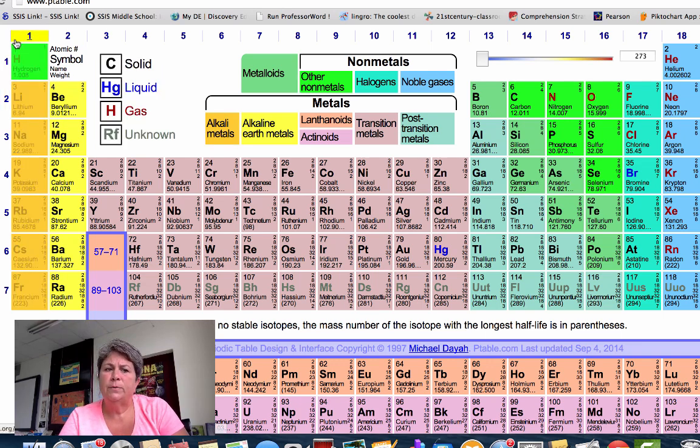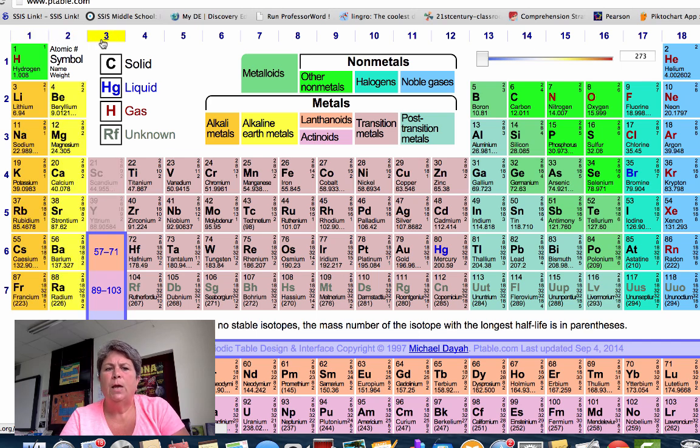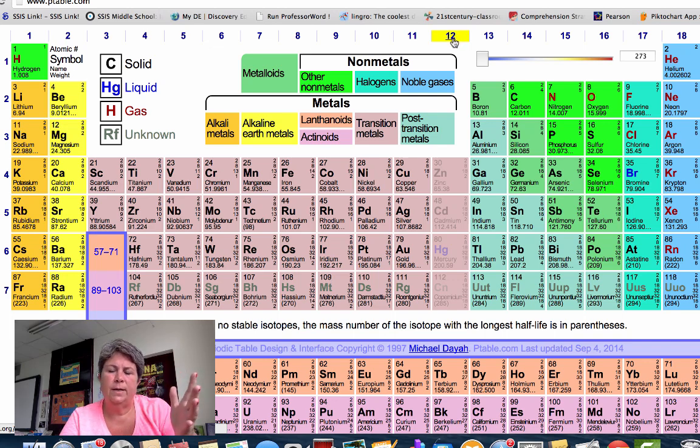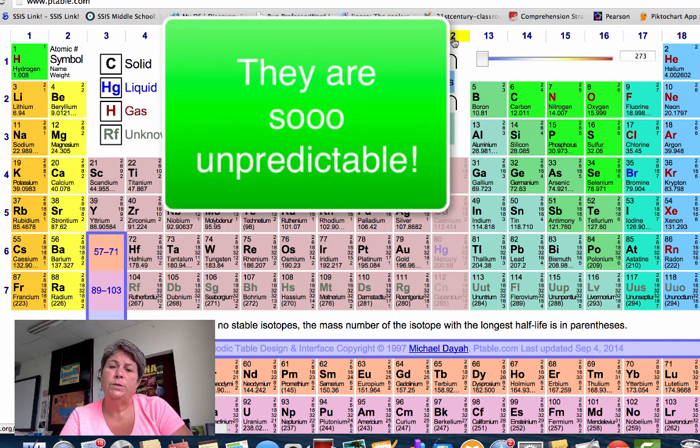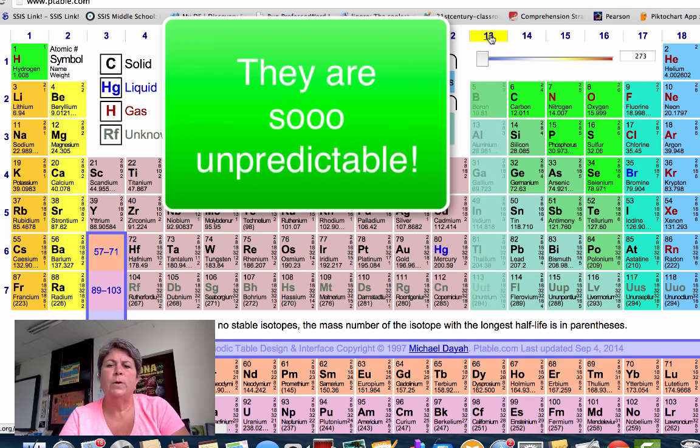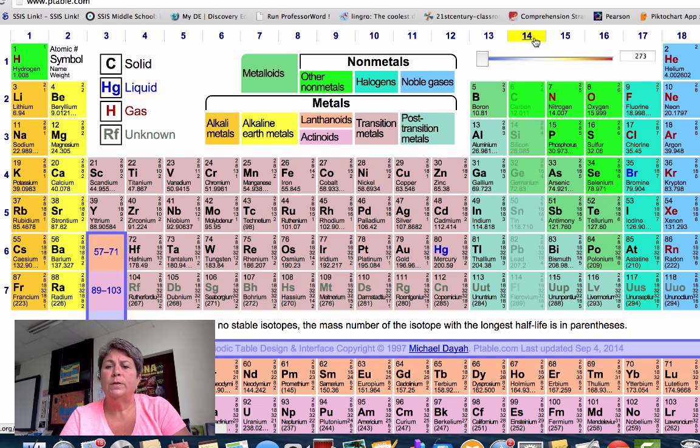Another thing that the periodic table tells us has to do with the groups or columns. We have 1, 2, and we're going to ignore 3 through 12 because they're kind of schizophrenic—you never really know how many valence electrons they're going to have. We'll talk more about that when we do metallic bonding. But for right now, don't worry about groups 3 through 12. Then we skip over to 13, 14, 15, 16, 17, and 18.